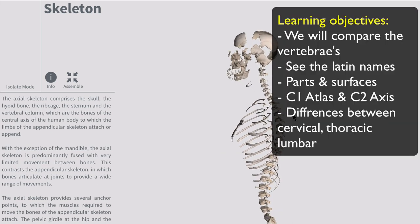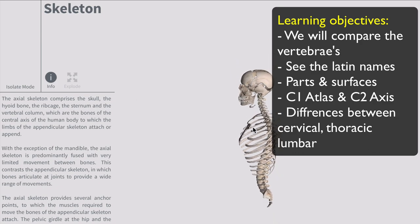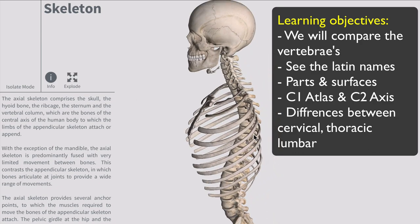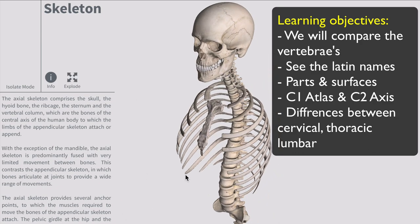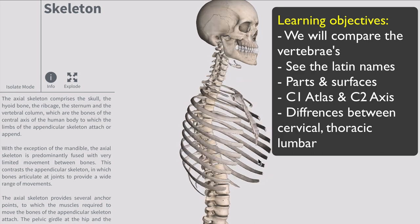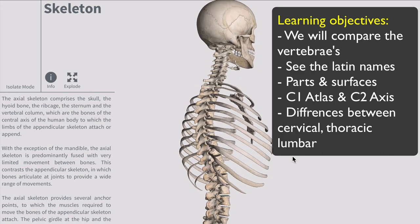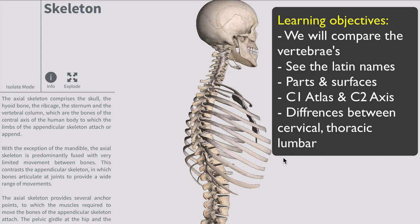The learning objectives are to compare the different types of vertebrae, to see the Latin names, parts and surfaces, origins and attachments of muscles and ligaments to these surfaces, and the differences between the cervical, thoracic and lumbar regions mainly.